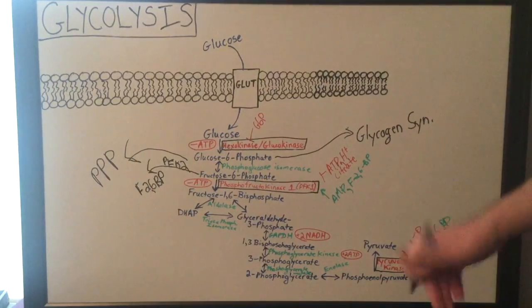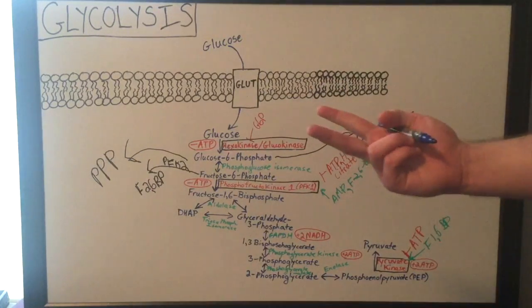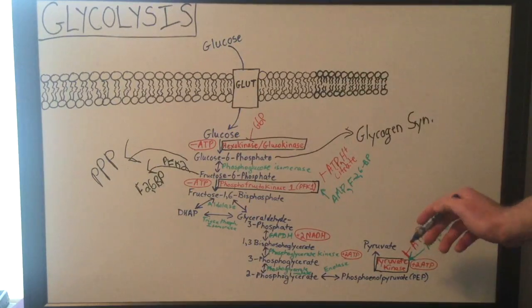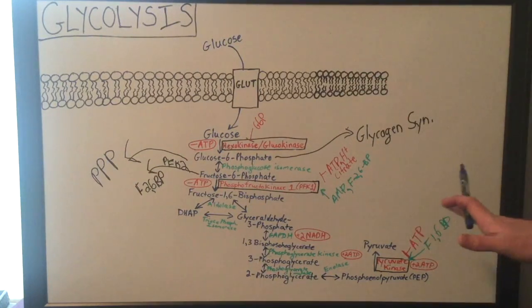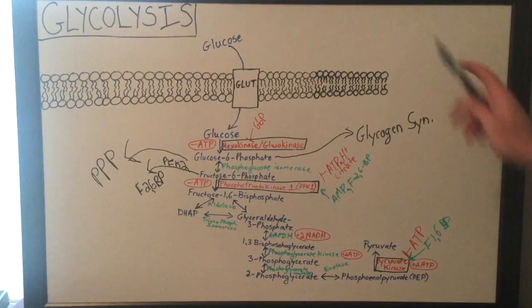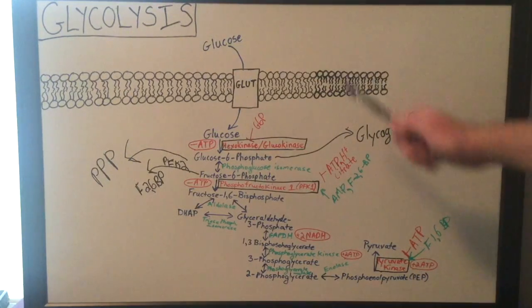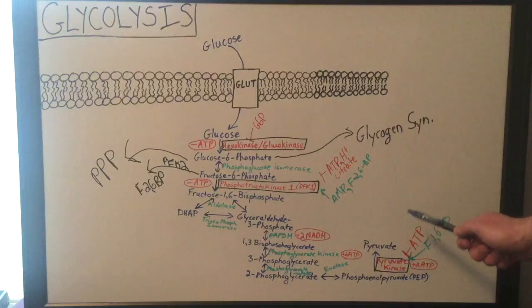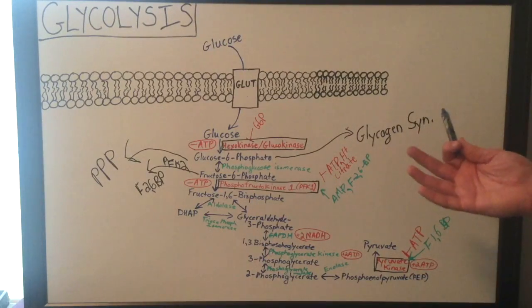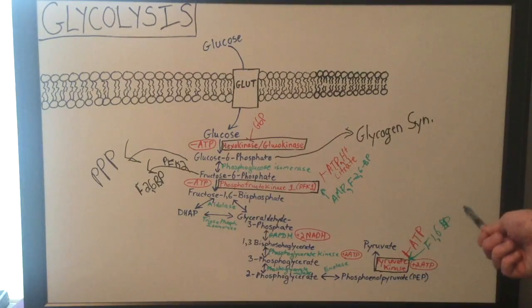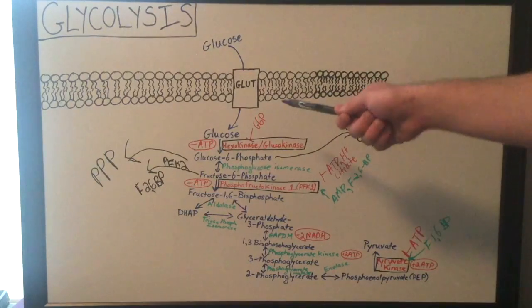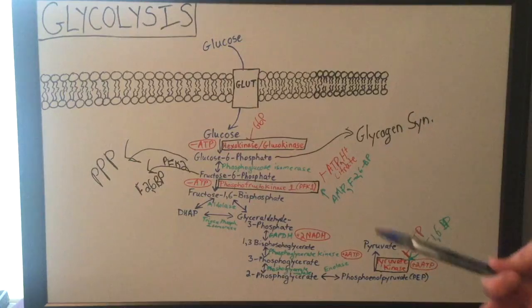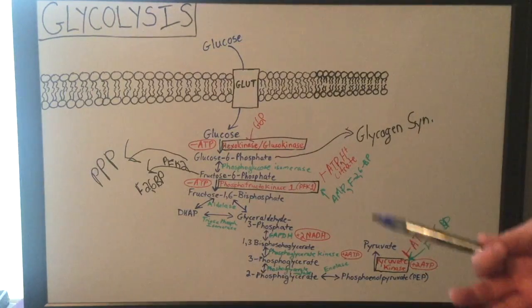So once you get your two pyruvate — you get two pyruvate per one glucose — it's also an important point to note that glucose is a six-carbon molecule whereas pyruvate is a three-carbon molecule. So you have two pyruvate, with three carbons per pyruvate adding up to six for the one glucose. It's kind of good to know that to help keep track of your carbons as well.